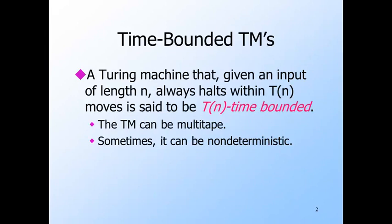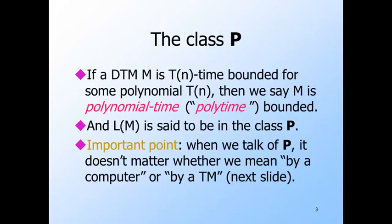Moreover, when there is a difference, it tends to be small. A Turing machine M is said to be polynomial time-bounded if it is bounded by any polynomial — linear, quadratic, cubic, or n to the thousandth power, as long as it is some polynomial. The languages accepted by polynomial time-bounded Turing machines form the class P. P is defined formally in terms of Turing machines, but it could just as well be stated as polynomial time on a real computer, because if an algorithm runs in polynomial time on a computer, it will run in polynomial time on a multi-tape Turing machine, though the degree may be higher.